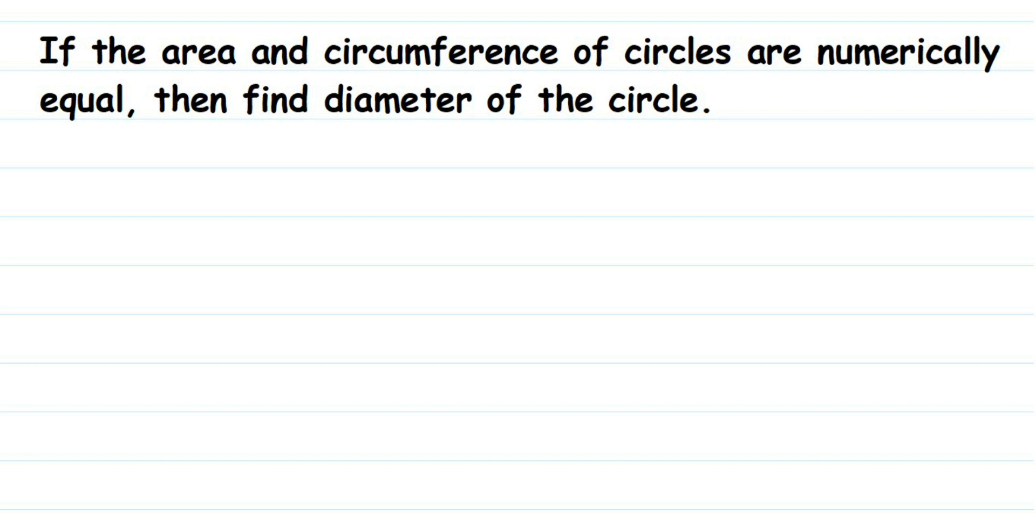Hello everyone, here's a question on circles. The question is: if the area and circumference of a circle are numerically equal, then find the diameter of the circle. So we have to find out the diameter, and they have not given any value. They have just given that area and circumference of circle are numerically equal, which means the values are the same.